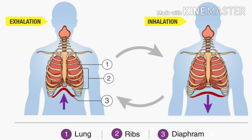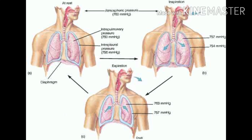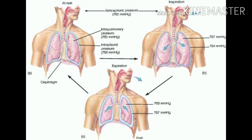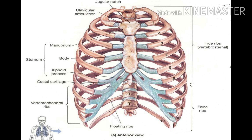During inspiration, there should be a pressure difference between the internal lungs and the external environment. For air to enter the lungs, the volume of the lungs must increase, so that the pressure inside the lungs becomes less than the external environment. Since the lungs are inside the thoracic cavity, the volume of the thoracic cavity must also increase.